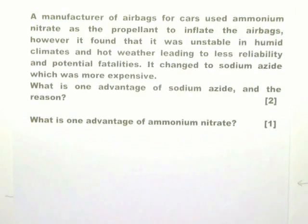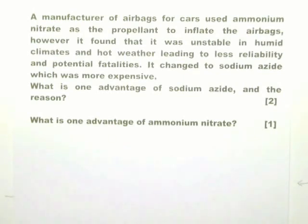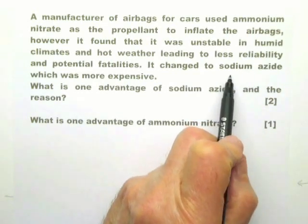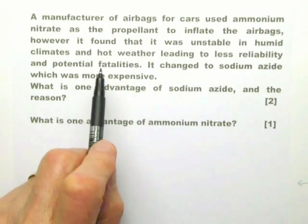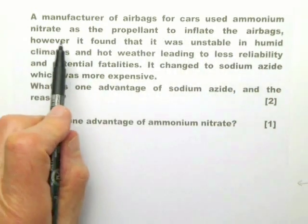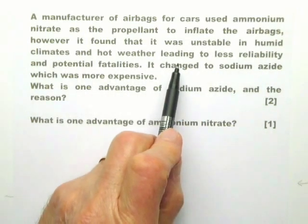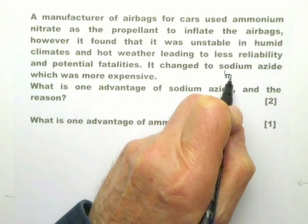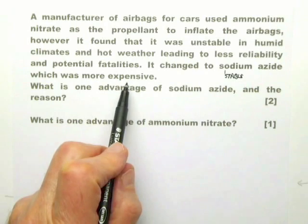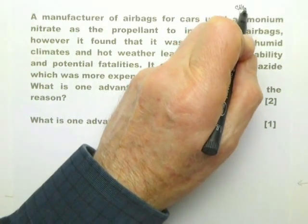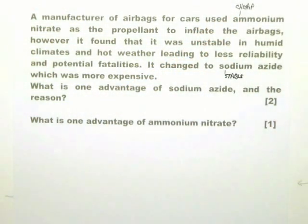Here is another question based on similar principles, where they talk about ammonium nitrate and sodium azide. You're not really expected to know much about those — you know ammonium nitrate is used in the fertiliser and explosive industries, and sodium azide is a sodium salt where the azide implies nitrogen. However, the examiner is telling you something about both of them. Ammonium nitrate is unstable in humid climates and hot weather — so sodium azide must be stable in humid climates and hot weather. It says it changes to sodium azide, which is more expensive — so ammonium nitrate must be cheap.